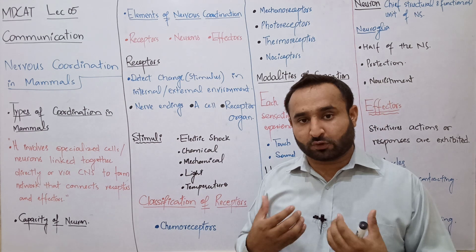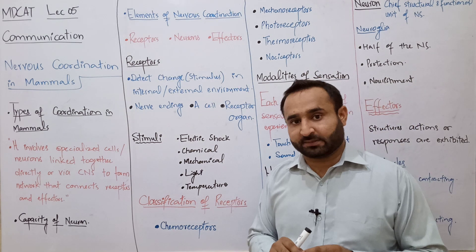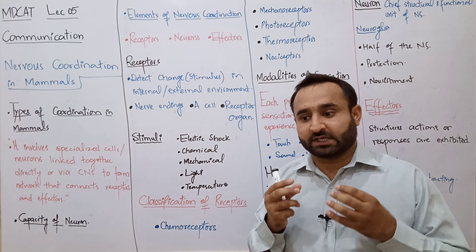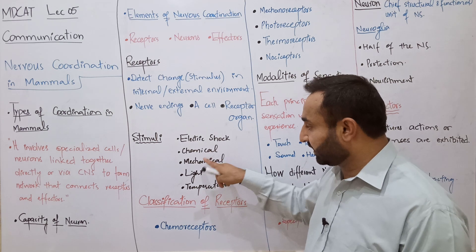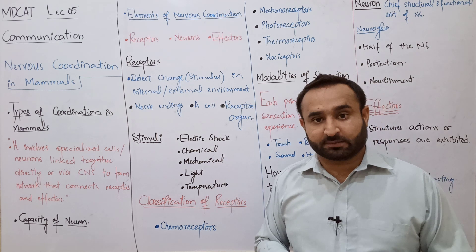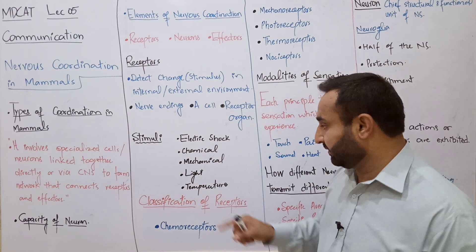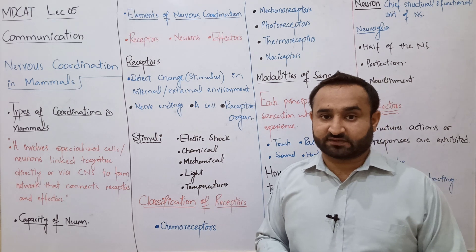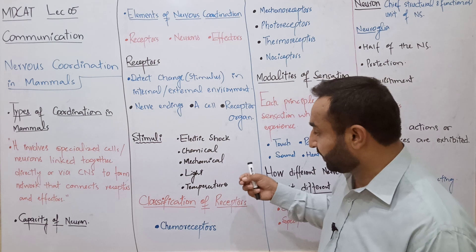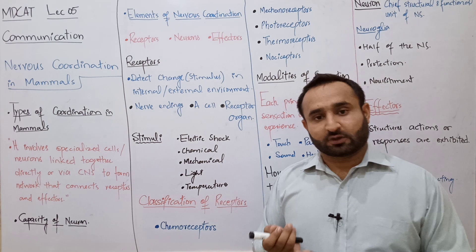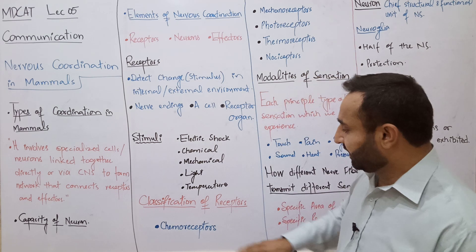ہمارے nose میں olfactory structures ہیں جو environment میں موجود chemicals کو detect کرتے ہیں۔ Mechanical stimuli جیسے touch اور pressure کو skin میں present receptors detect کرتے ہیں۔ آنکھ میں rod cells اور cone cells light کو receive کرتے ہیں۔ Temperature کے لیے skin میں cold receptors اور heat receptors ہیں جو heat اور cold کو detect کرتے ہیں۔